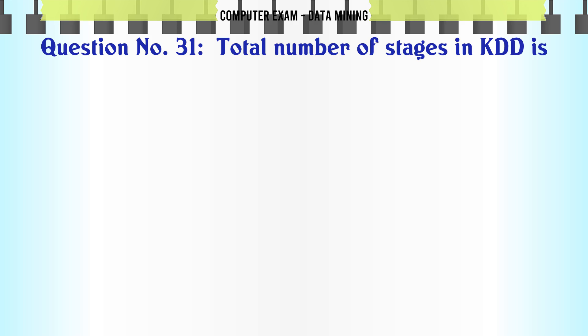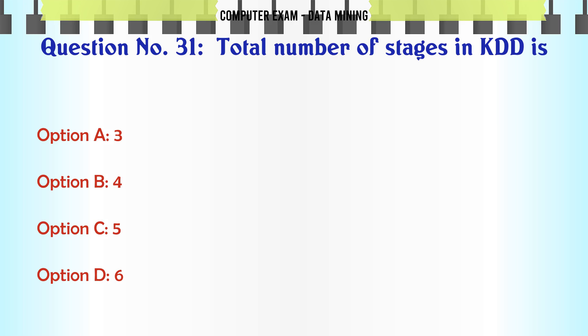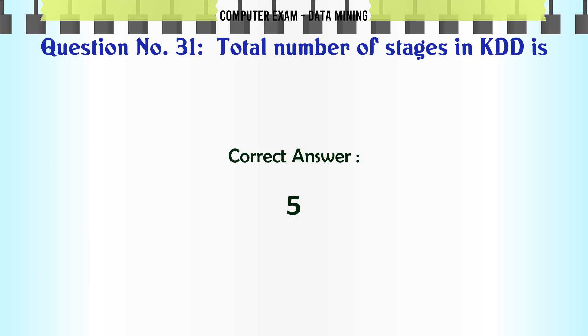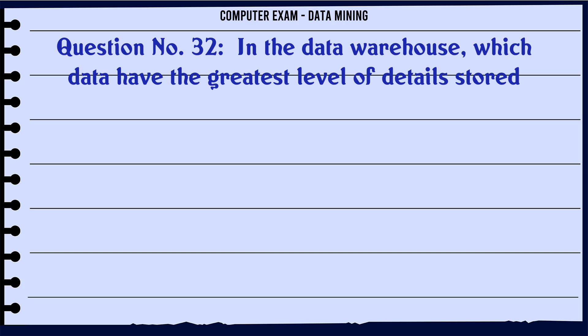Total number of stages in KDD is: A. 3. B. 4. C. 5. D. 6. The correct answer is 5.